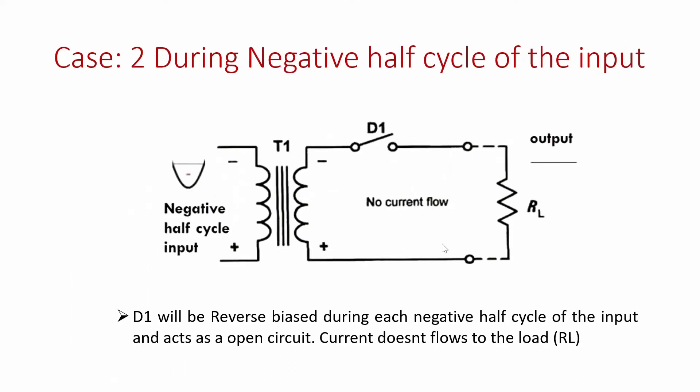During the negative half cycle, the polarity across the transformer secondary reverses — minus is connected to the anode of the diode. The diode is therefore reverse biased and acts as an open switch. The circuit becomes an open circuit, no current flows through the load RL, current is zero, and therefore the output voltage across RL is also zero.